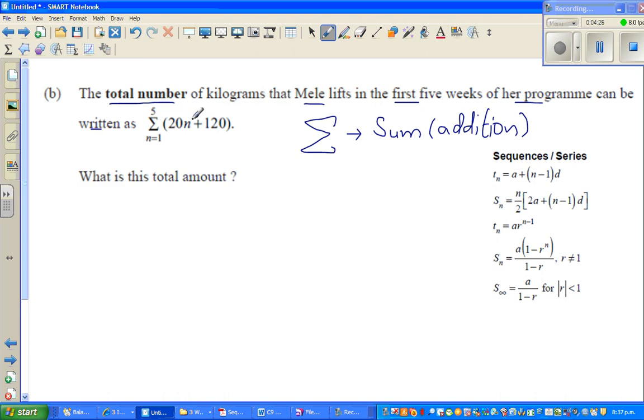Wherever you have this as a formula, this Greek letter is for summation. So the formula tells me the total number of kilograms that Mele lifts in the first five weeks can be given by this formula. This is sigma n from 1 to 5, 20n plus 120.